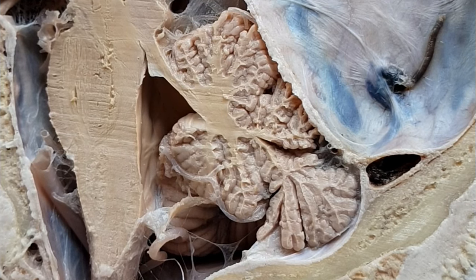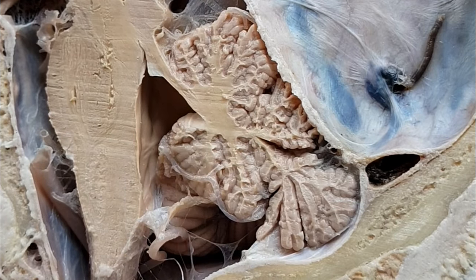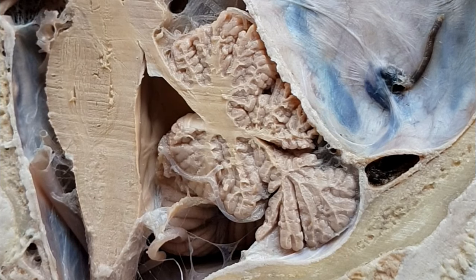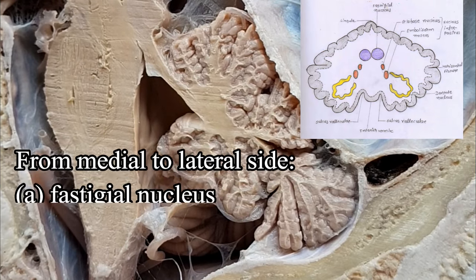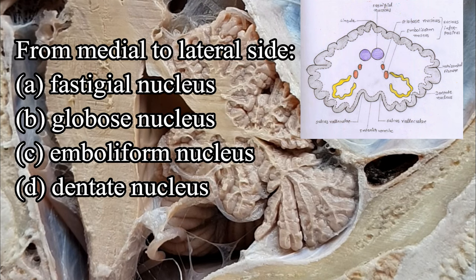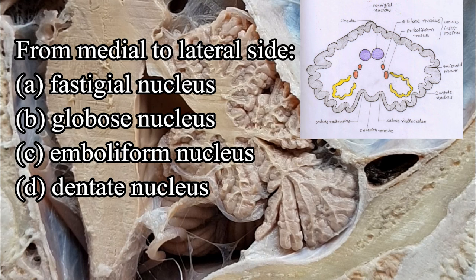The medullary core of white matter contains the deep cerebellar nuclei. From medial to lateral side, on each side, these nuclei are: nucleus fastigii, nucleus globosus, nucleus emboliformis, and nucleus dentatus.